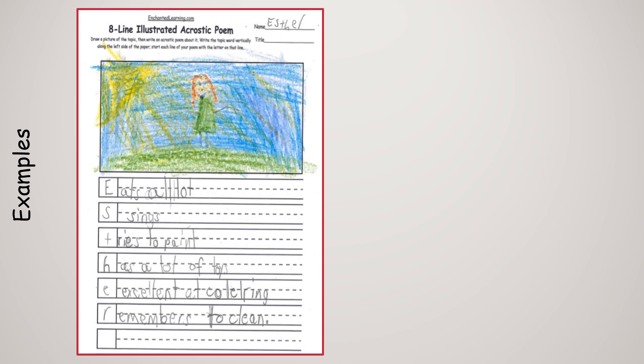Under T, she writes 'tries to paint.' Under H, she's written 'has a lot of toys.' Under E, she's put 'excellent at colouring.' And under R, she puts 'remembers to clean.'